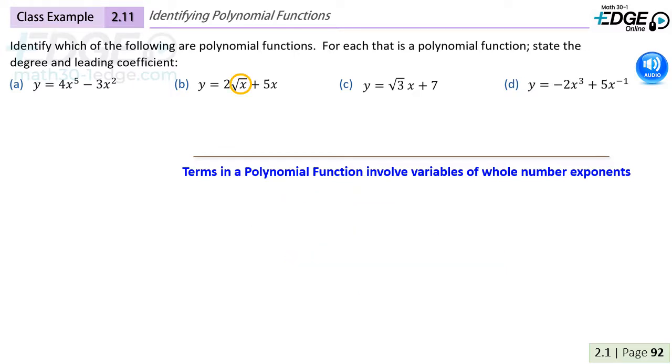In the examples on this slide, we see in example b the square root of x, which would be x to the 1 half, and we also see x to the negative 1, which is immediately problematic because it is not a whole number.